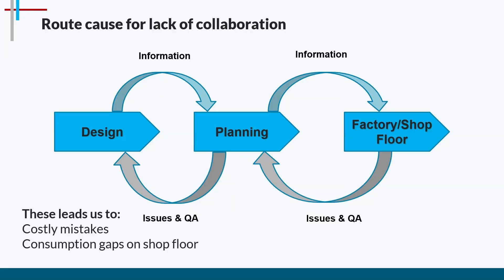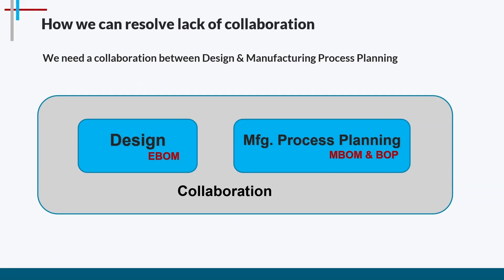The root cause of lack of collaboration is that design, planning, and factory departments are not communicating in real time — feedback from factory to planning takes a lot of time, and vice versa. When changes are made to the engineering bill of material, that information needs to be communicated to the manufacturing process planning team so they have updated data. Without this regular communication, costly mistakes occur and consumption gaps appear in the data flow.